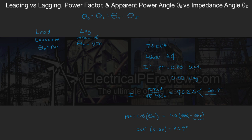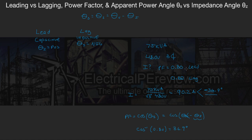If this is a leading system, we know our current must be positive, so our answer is 90.2 amps at an angle of positive 36.9 degrees. However, for a lagging system, our current must be negative, so if the power factor was 0.8 lagging, our current would be 90.2 amps at a phase angle of negative 36.9 degrees. This matters because if you get the wrong polarity, you'll either add when you should subtract or subtract when you should add in subsequent calculations.